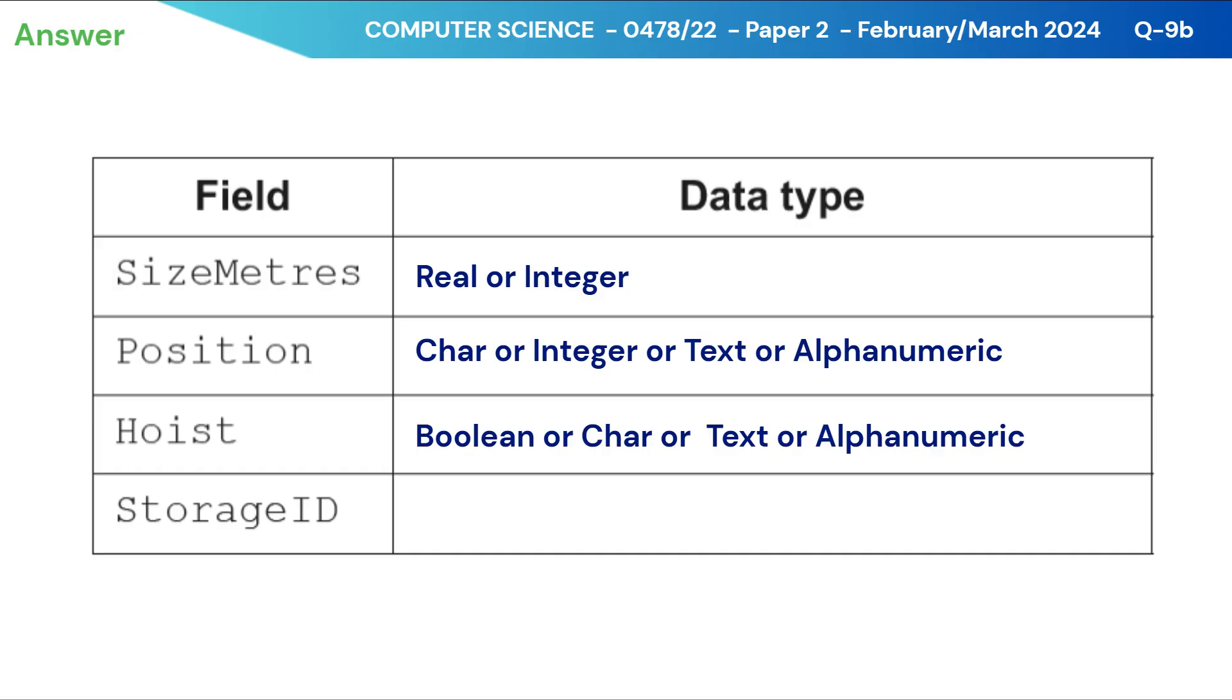Lastly, storage ID. It will store mix of characters and numbers, so text or alphanumeric are most suitable data types for it.